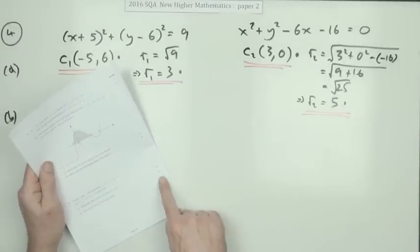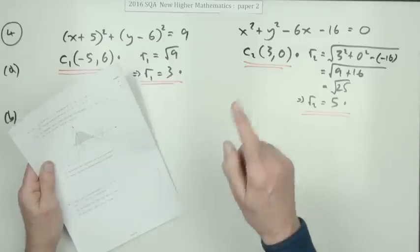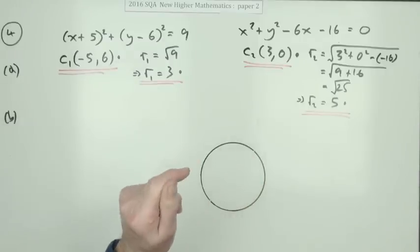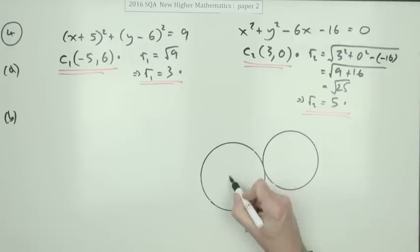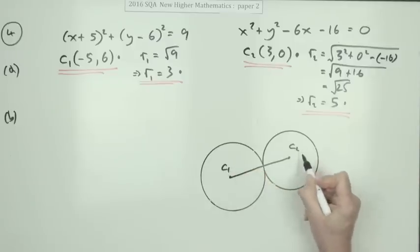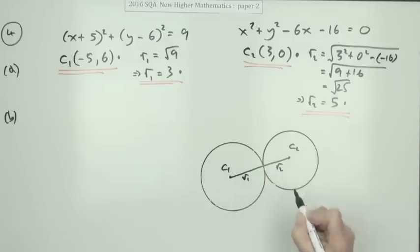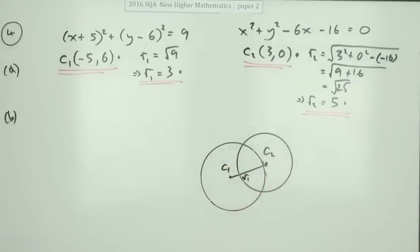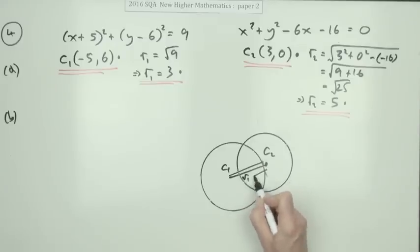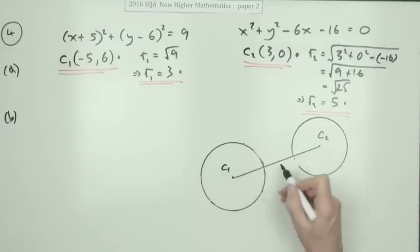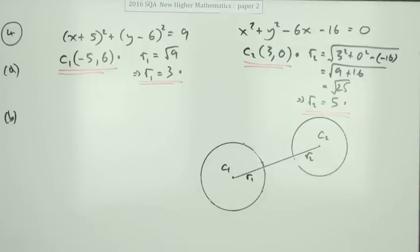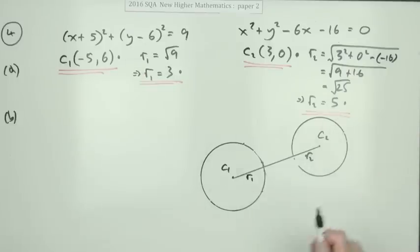For part b — three marks — show that the two circles don't intersect. Consider: if a circle touches another externally, the distance between their centers equals the sum of the radii. Move them closer and they intersect, meaning the distance is less than the sum of the radii. Move them further apart and they don't intersect, meaning the distance between the centers must be greater than the sum of the radii. That's what you have to demonstrate here.